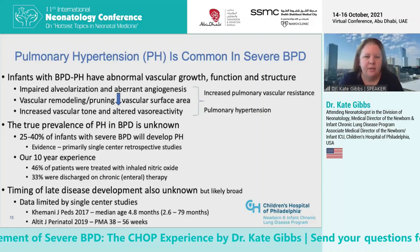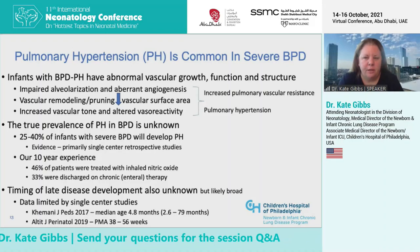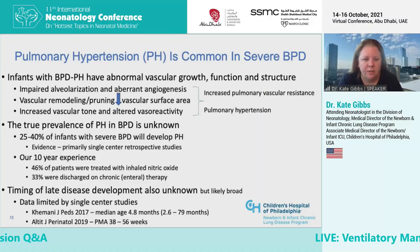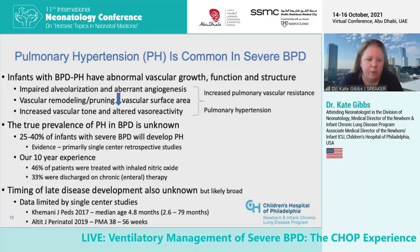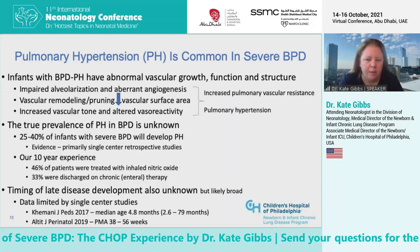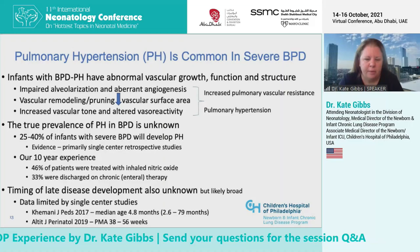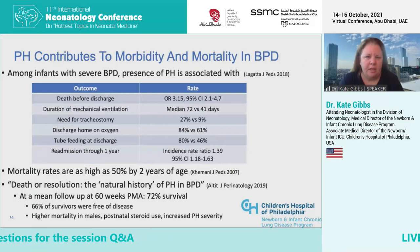Pulmonary hypertension is common in severe BPD. Patients have abnormal vascular growth, function, and structure due to impaired alveolarization and aberrant angiogenesis, ultimately leading to increased pulmonary vascular resistance and pulmonary hypertension. The true prevalence is unknown, but approximately 25 to 40% of infants will develop pulmonary hypertension based on primarily single-center retrospective studies. In our 10-year experience, we've treated 46% of patients with inhaled nitric oxide and discharged a third on chronic enteral therapy. The timing of late disease development is also unknown, but likely broad — ranging from two months to 80 months post birth.